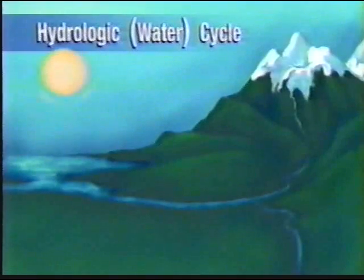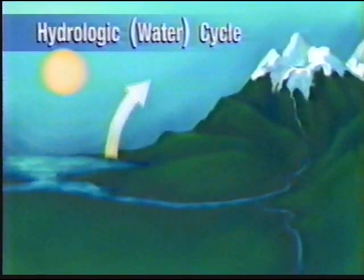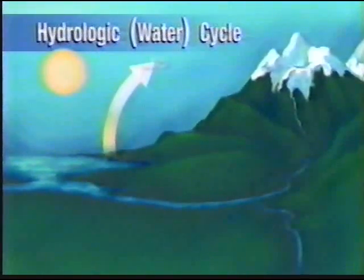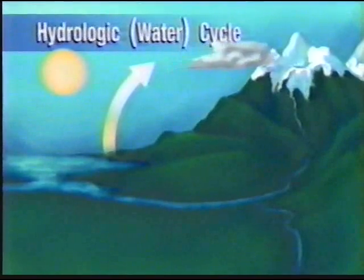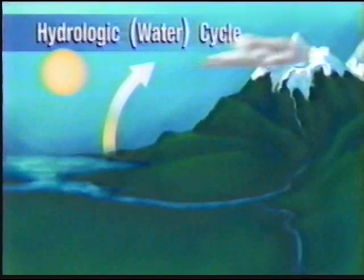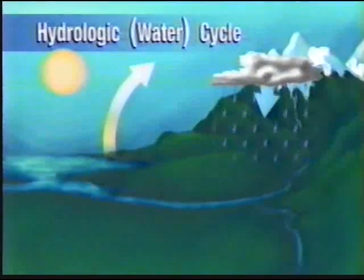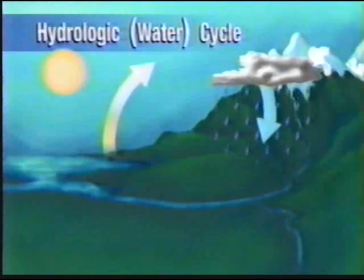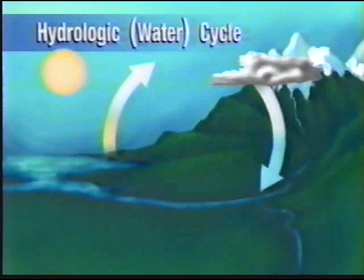First, the sun heats surface water. The water evaporates and changes to vapor. Then the vapor is carried through the air. As it rises, vapor cools and condenses to form clouds. Eventually, this moisture falls to the earth as some form of precipitation, such as rain and snow.